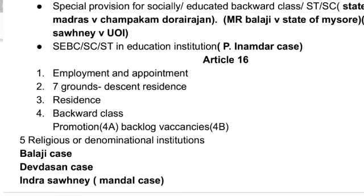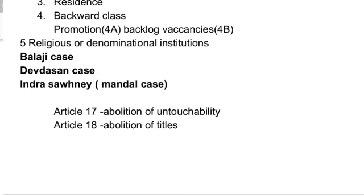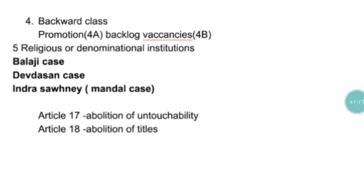Now we will talk about Article 17 and Article 18, which are very simple. Article 17 talks about the abolition of untouchability — the practice of untouchability is abolished and its practice in any form is forbidden. Article 18 talks about abolition of titles — the state shall not confer any titles, and no citizen shall accept any title from a foreign state. That is all about right to equality.